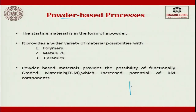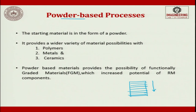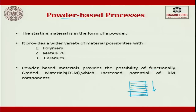What is functionally graded material? Suppose we take a cube and try to change the physical property of the entire object in a very graded manner. At every layer there will be a compositional difference from the previous layer. This compositional difference can enhance strength, reduce weight, or enhance functionality. That is what is called functionally graded material. This is not possible in liquid-based techniques, which further increases the potential of rapid manufacturing components.